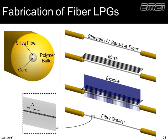To fabricate a long period grating, we strip away the polymer buffer, lower a chrome mask where black regions block light and clear regions allow it to pass, then shine ultraviolet light through that mask, periodically exposing the optical fiber to UV light and inducing a grating. This is not a Bragg grating — a Bragg grating couples between counter-propagating waves. Here we want to couple between two forward propagating waves.